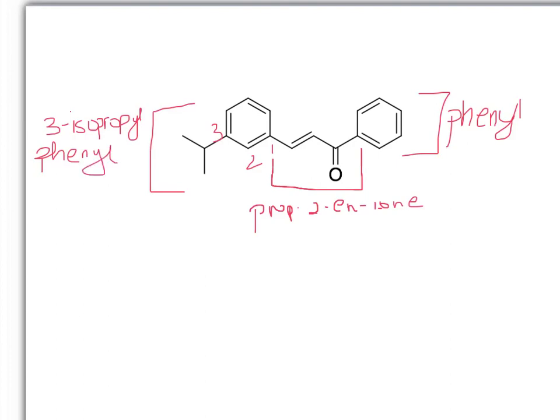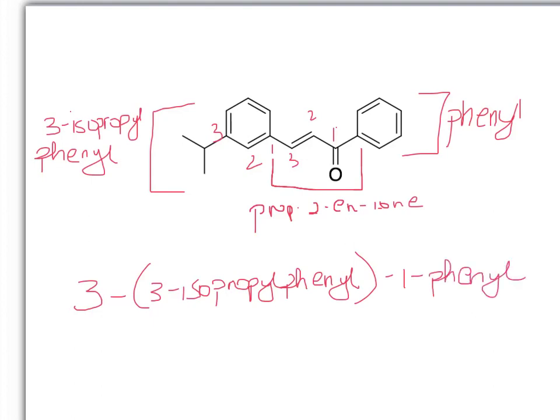And you go ahead and you put those together again. So you'll have three. Again, remember this is one, two, three. So it's on the three side. So three, three-isopropylphenyl, and one phenyl prop-2-ene-1-one.